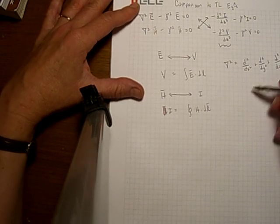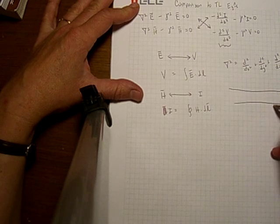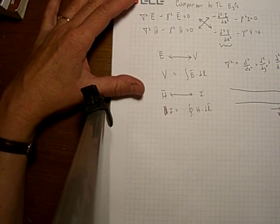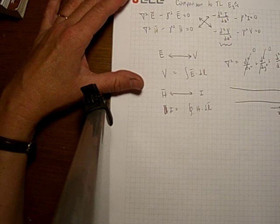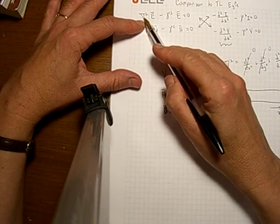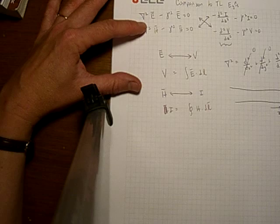In the case of a transmission line, where we had done a simple transmission line in the z direction, the change in the x direction is zero and the change in the y direction is zero. So this term right here would simply be the second derivative in z.